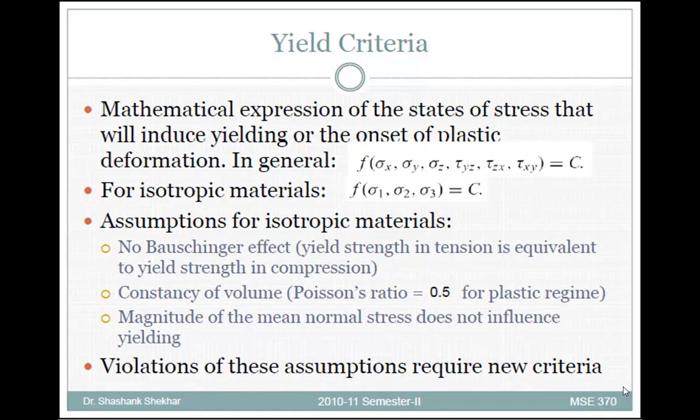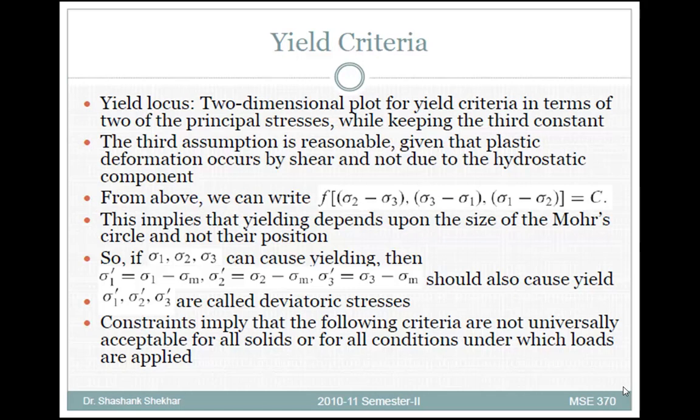For yield criteria, the assumptions we make are: there is no Bauschinger effect, volume is constant, and the magnitude of the mean normal stress does not influence yielding. Using these assumptions, we keep one dimension constant and use the remaining two dimensions to plot the yield criteria.